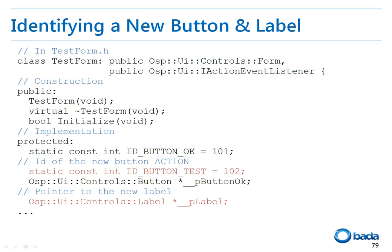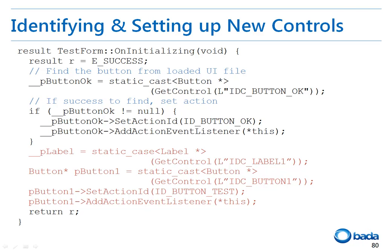Next, we will modify the source code to use these controls in the application. If this new button is pressed, the text on the label will be changed. In the testform.h file, I have assigned an ID for the newly created button and declared a member variable to save the pointer to the label. In the initialization function of the form, get the label and the button as we did for the OK button, then assign an action ID to the button. Note that the label is declared as a member variable but the button as a local variable, because the pointer to the label must be kept to change the text later, while the pointer to the button is not necessary since the button action can be recognized by the action ID.